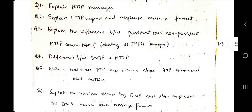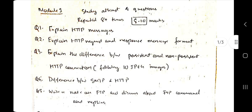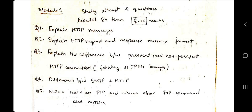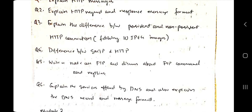In Module 1 there are six questions you can't miss — study at least four among them. The main two topics are: first, the web, covering HTTP, SMTP, and FTP. These three carry a lot of weight — if you study them you can easily score more than 10 marks. The last important topic is DNS, which is repeated more than eight times. Know the services offered by DNS, the record system, and the message format, and you have a 90% probability of scoring more than 15 marks from this module.